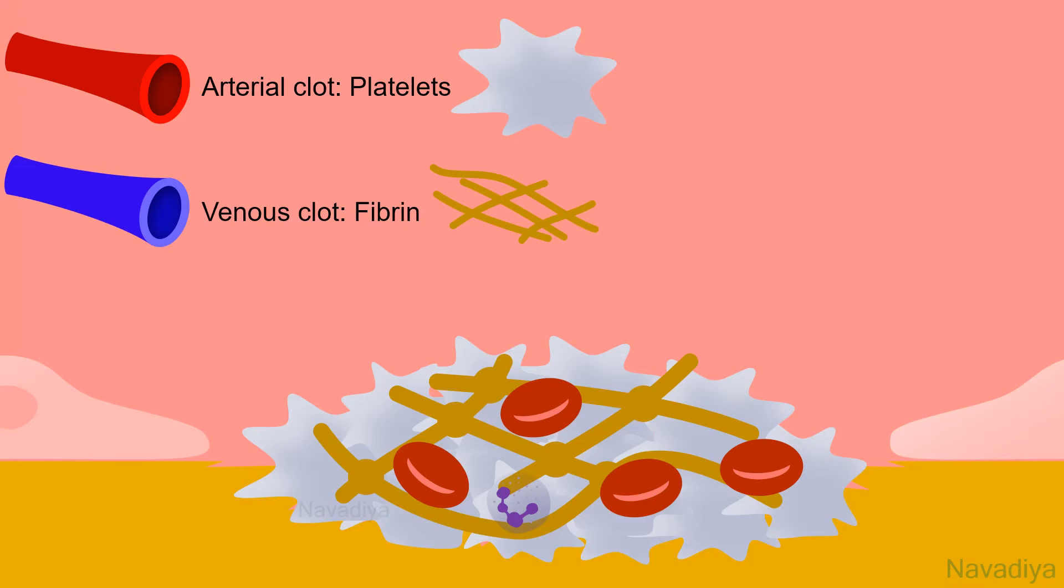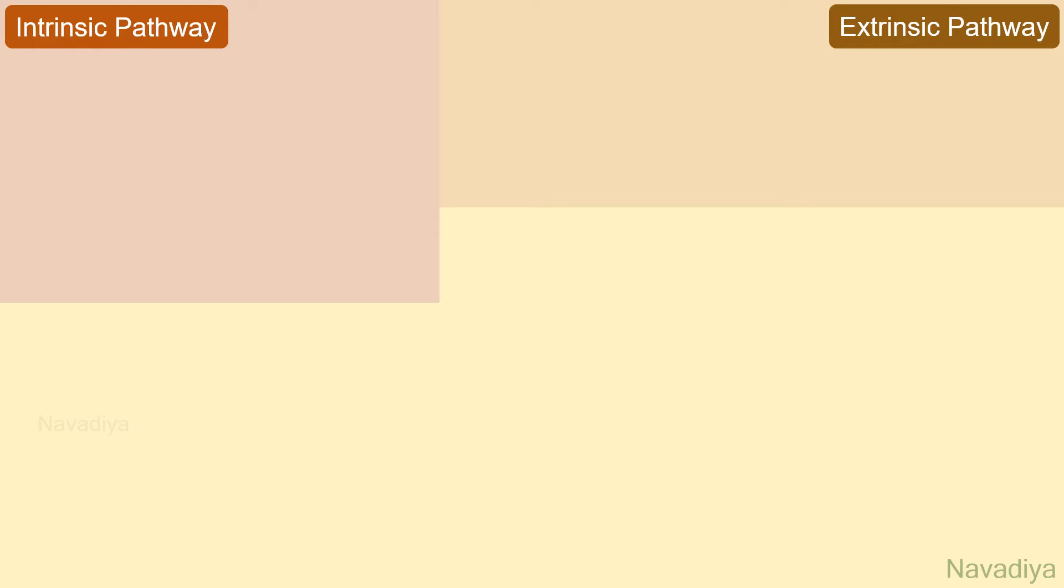That's all about coagulation. Now it's time for summary. Coagulation can start with intrinsic pathway and extrinsic pathway. Both of them merge at the common pathway. Intrinsic pathway is activated when blood comes in contact with negative surface. It converts factor 12 into factor 12a. Kallikrein also helps this process.